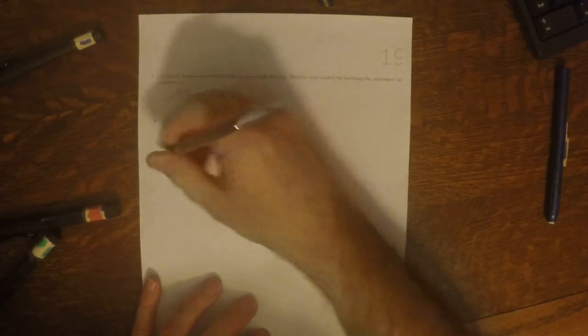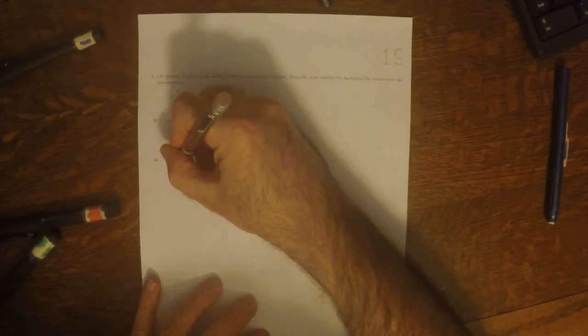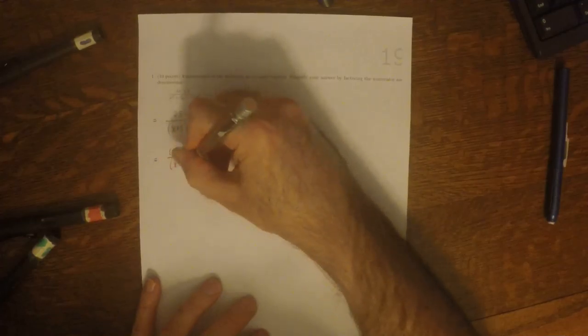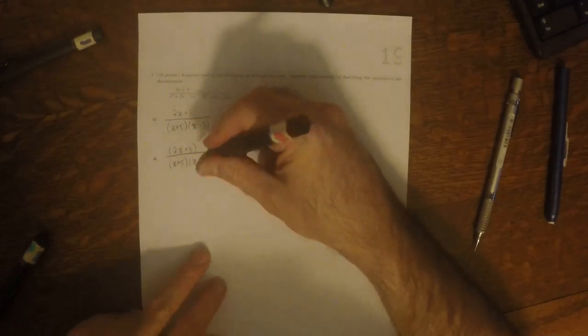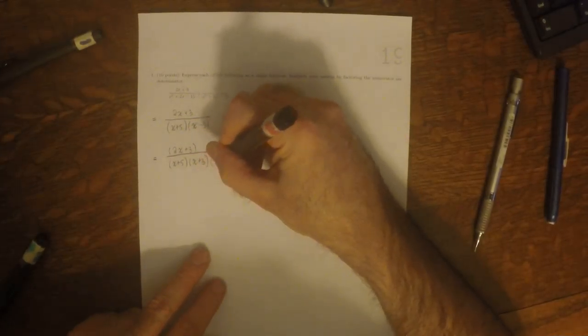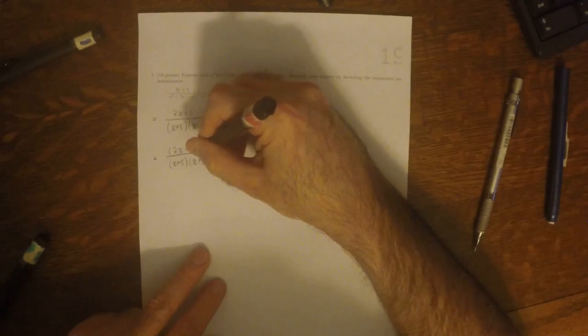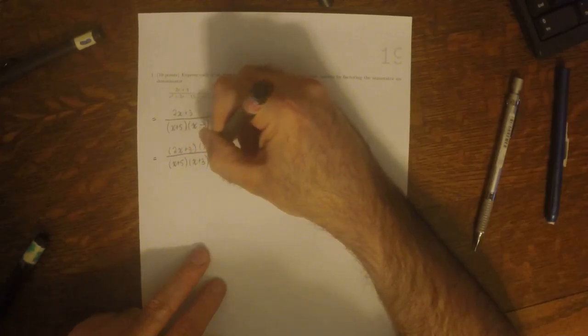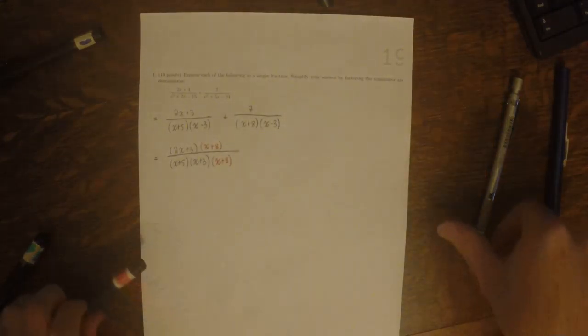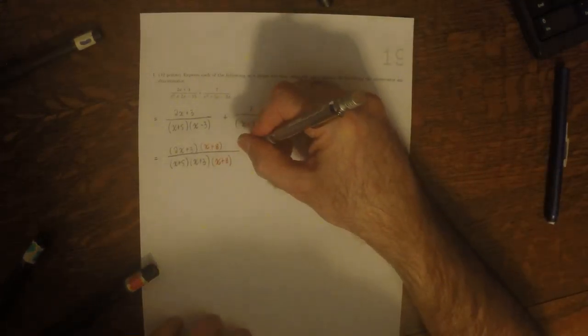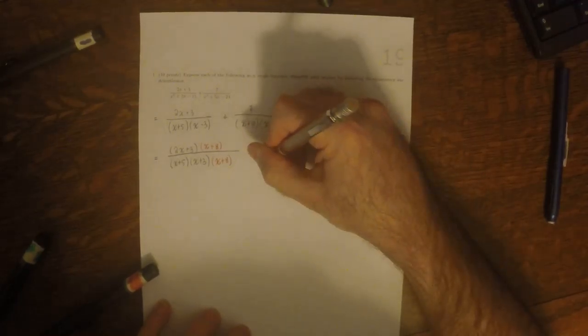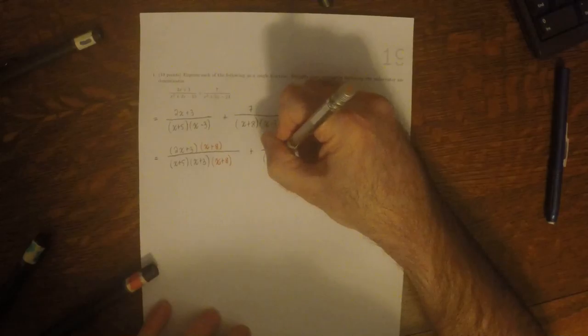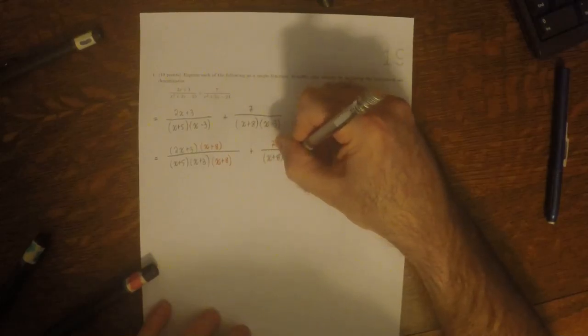2x plus 3 over x plus 5 x minus 3, and this one was missing an x plus 8, so I'll put the x plus 8 here, but I also must put it here to undo it. And then plus 7 over x plus 8 x minus 3.